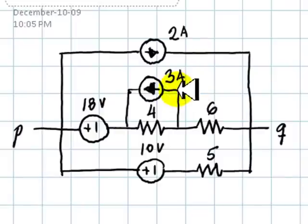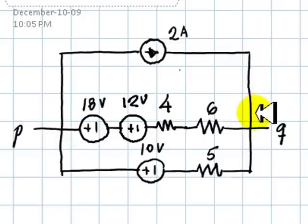I will replace this Norton group by a Thevenin group. 3 amps in parallel with 4 ohms will be replaced by 3 times 4, 12 volts V source in series with a 4 ohm resistor. The circuit now looks like this.